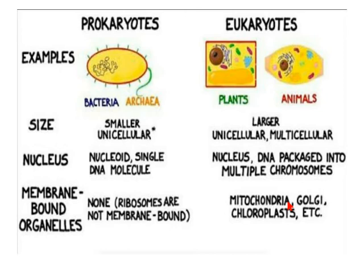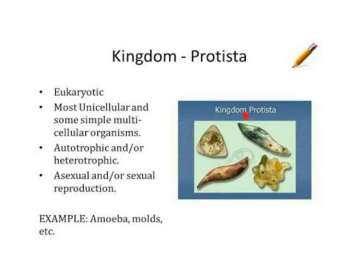In the five kingdom classification, besides Kingdom Monera, all other organisms are eukaryotes. Only Kingdom Monera is prokaryotic — meaning only bacteria are prokaryotes. The rest — Fungi, Plants, Animals, and Protista — are all eukaryotes. The second kingdom is Kingdom Protista.